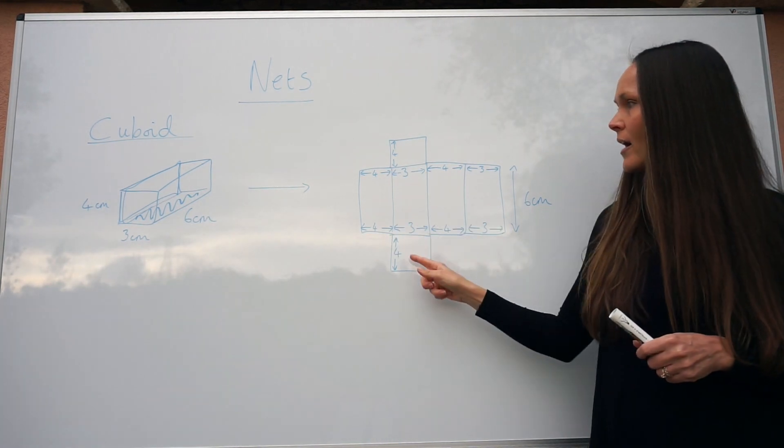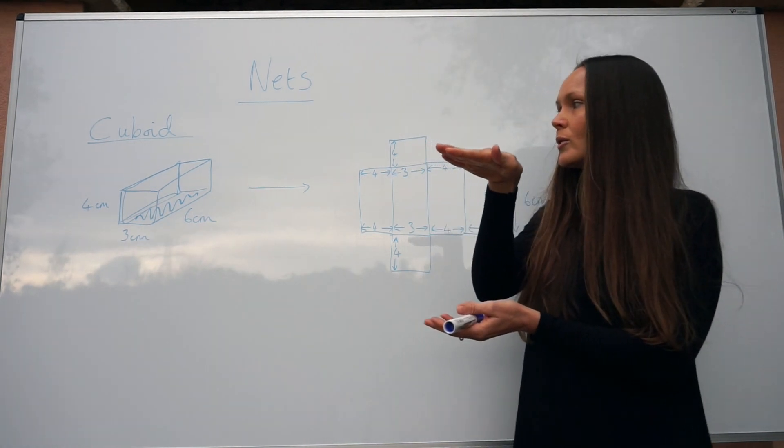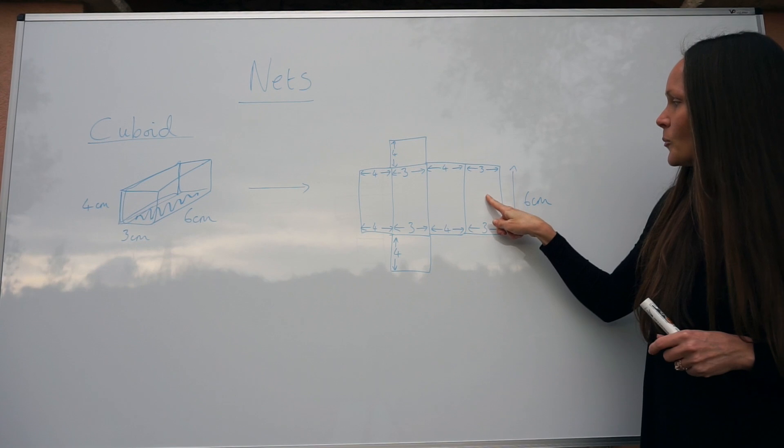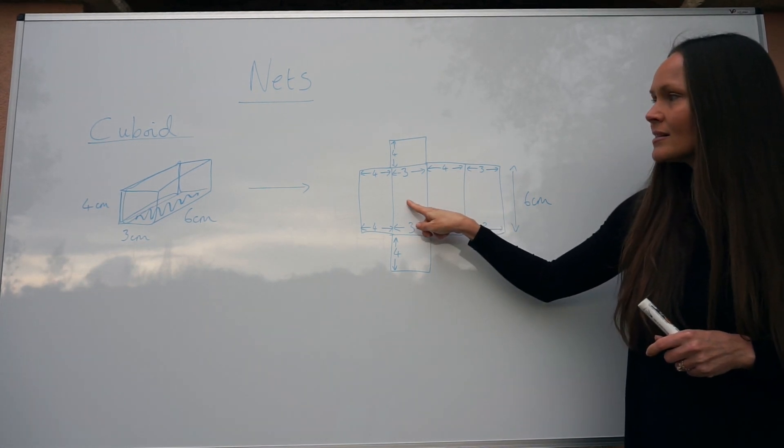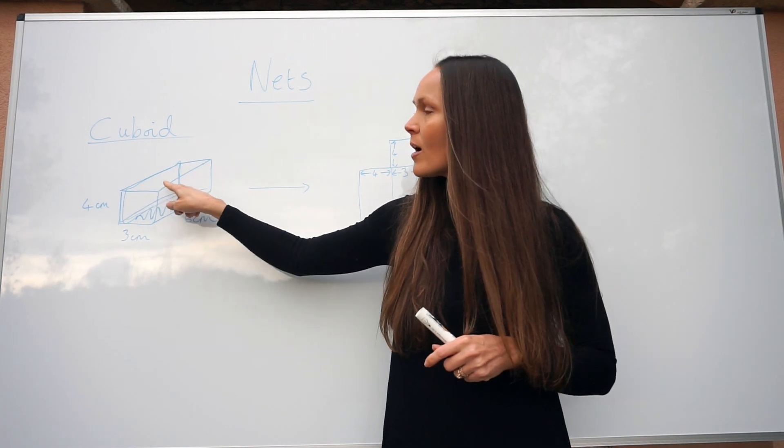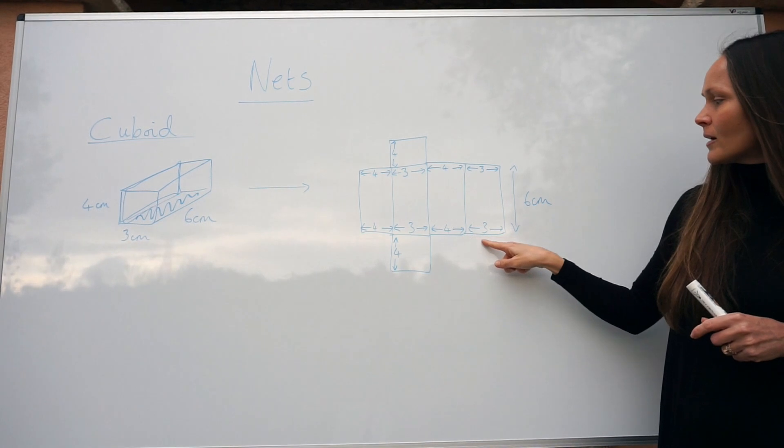You can see there are six faces altogether. So far we've only drawn five, so the last one here is the top of the cuboid. That makes six faces altogether, and it should be the same as the base. You can see the base here, three by six, is the same as the one directly above on top, three by six.